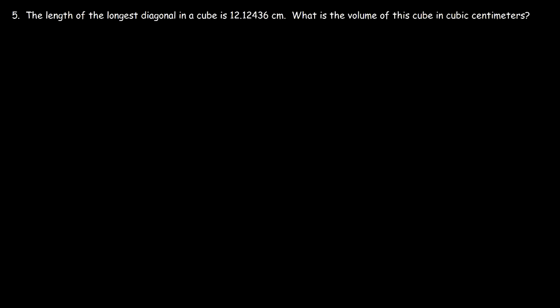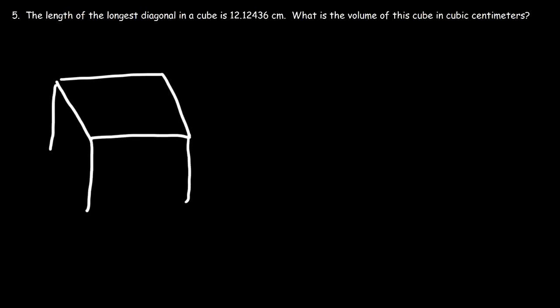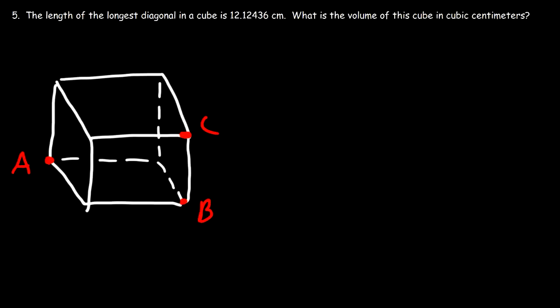What about this problem: the length of the longest diagonal in a cube is 12.12436 centimeters — what is the volume of the cube in cubic centimeters? Given the longest diagonal of a cube, how can we use that to calculate its volume? Let's label points A, B, and C: the distance from A to B is one face diagonal, and the distance from A to C is the longest (space) diagonal.